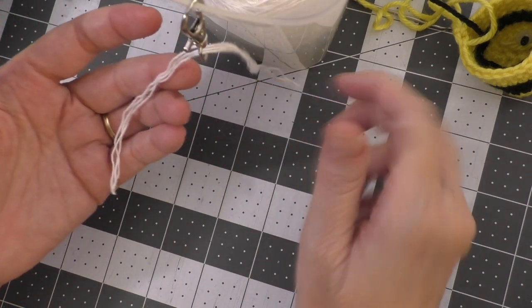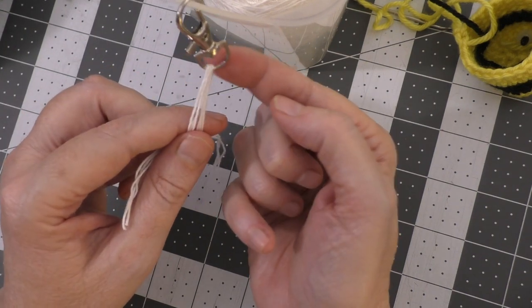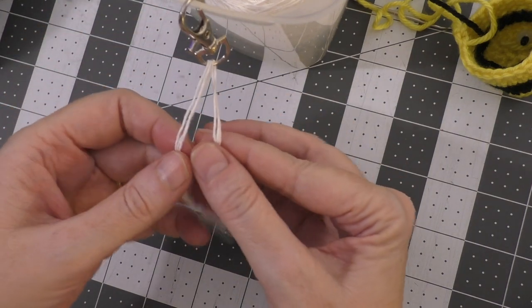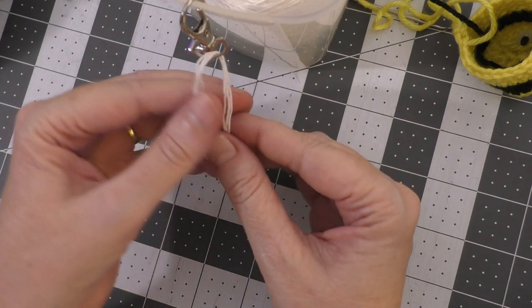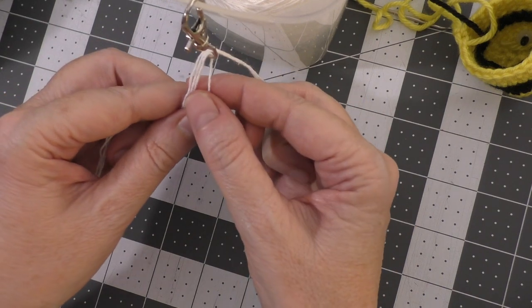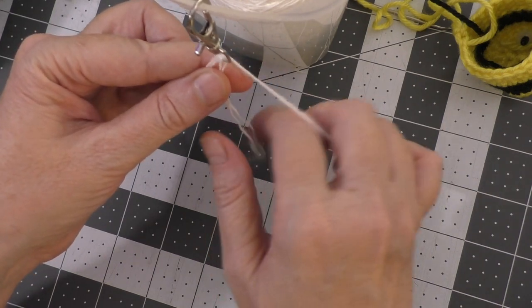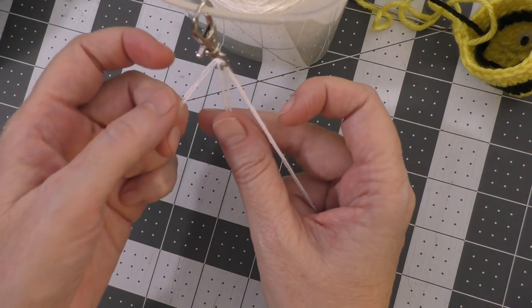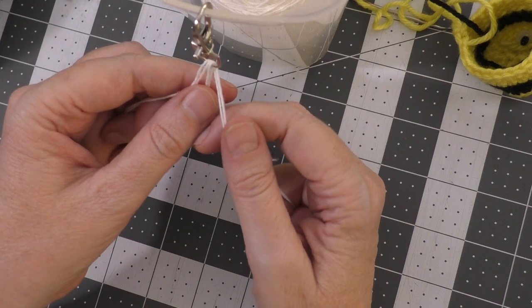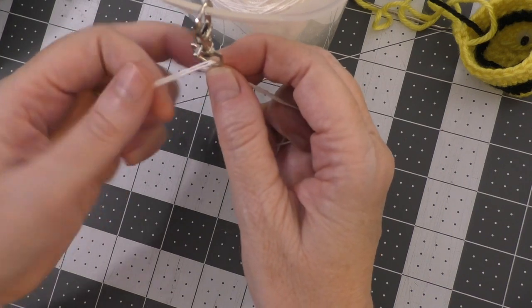I've got the cotton thread threaded through that bottom swivel loop part of my clip. And so now what I want to do is I want to divide, because I've got three strands on one side and I have three strands on the other side. So I take one strand from each side, like that, and put them together. And that is going to now give me three sections of two strands each. Now, I'm just going to braid it, just like a regular three strand braid. So however you like to do your braid.